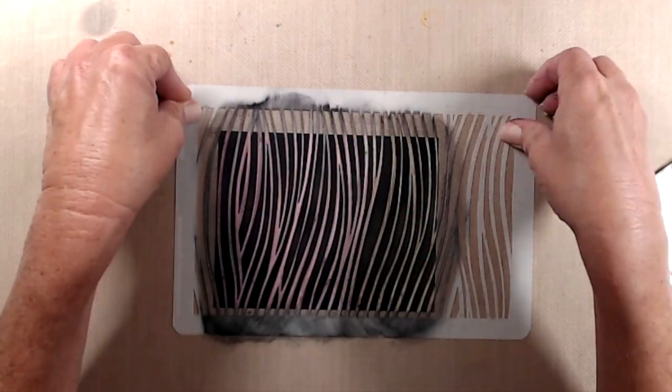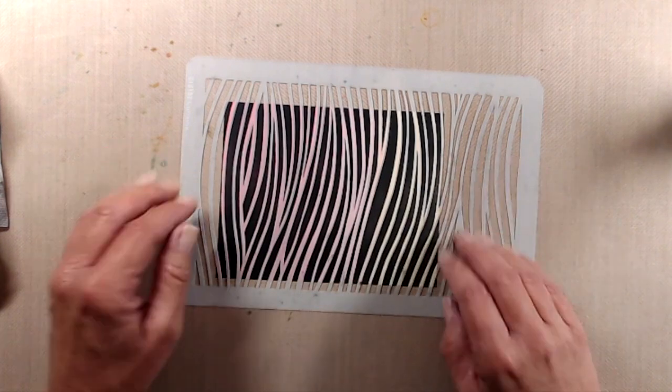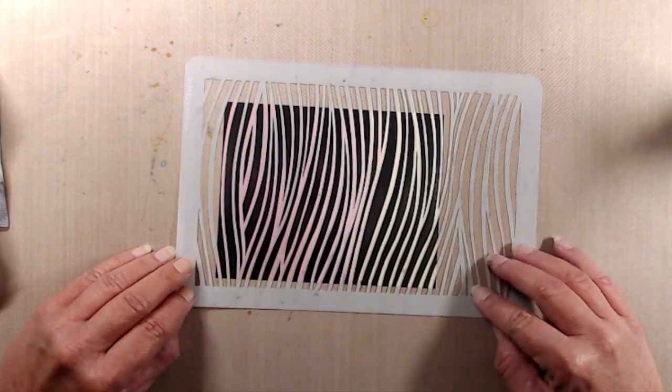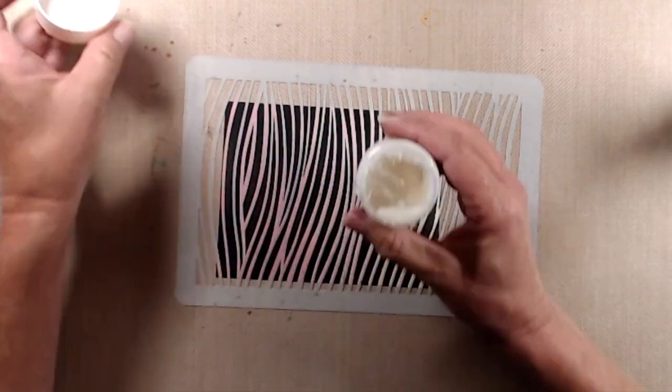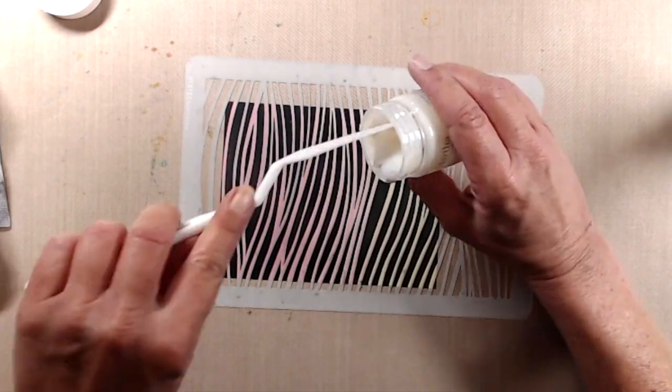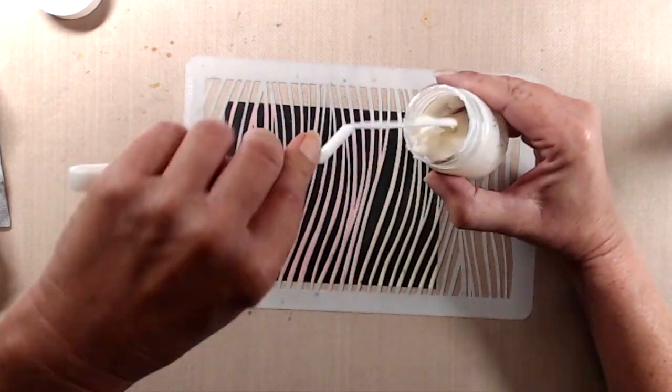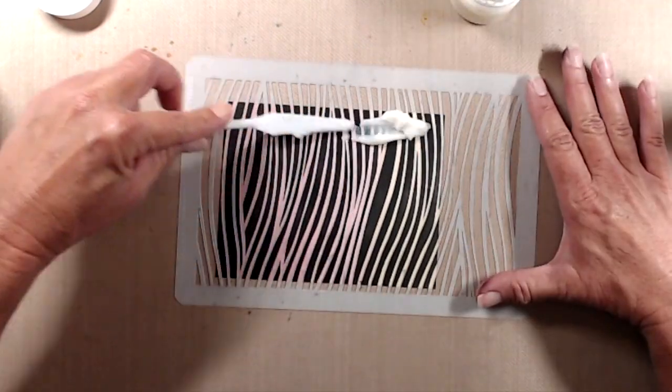Once I was done stenciling with the black ink, I cleaned off my stencil and my workspace, and then I put the stencil back on top of my card panel. This one was pretty easy to line up because of that wider stripe that's down towards the right hand side. And then I grabbed some Martha Stewart glitter paste, I mixed it up really well, and I used my palette knife just to apply the glitter paste up at the very top of the card panel.